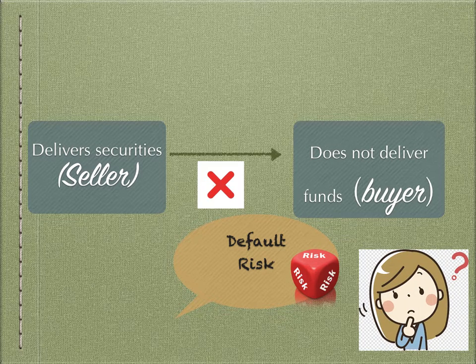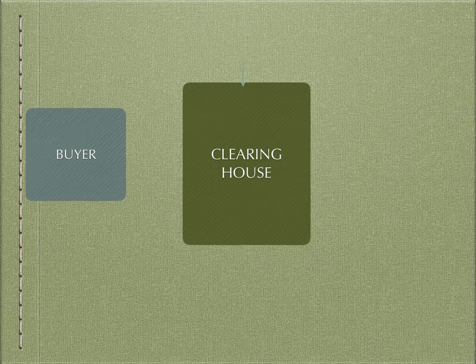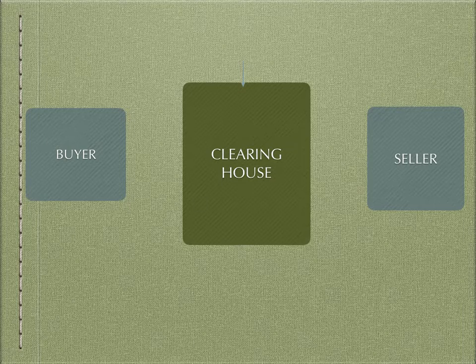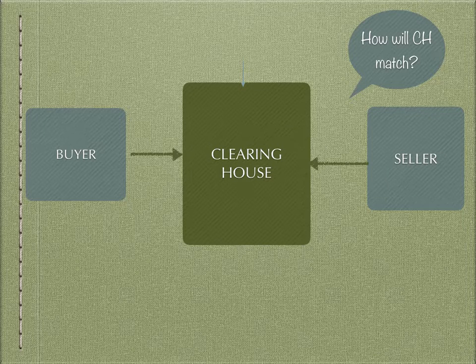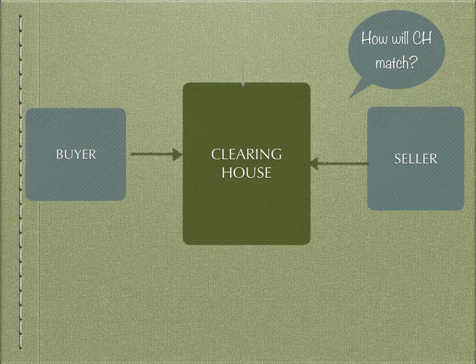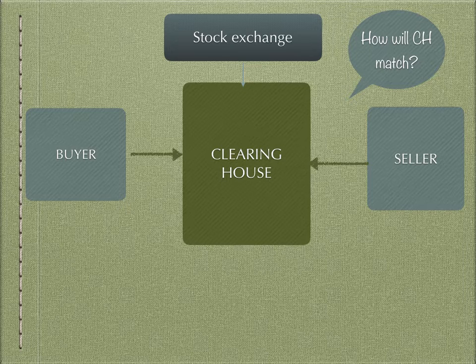How do we mitigate or reduce the counterparty risk? Most stock exchanges have established what is called a clearing house. A clearing house is an entity that is independent of the stock exchange and independent of the buyers and sellers. The buyers and sellers pay their obligations into the clearing house, which then matches the transaction details. Matching requires details from an independent party — and that independent party is the stock exchange.